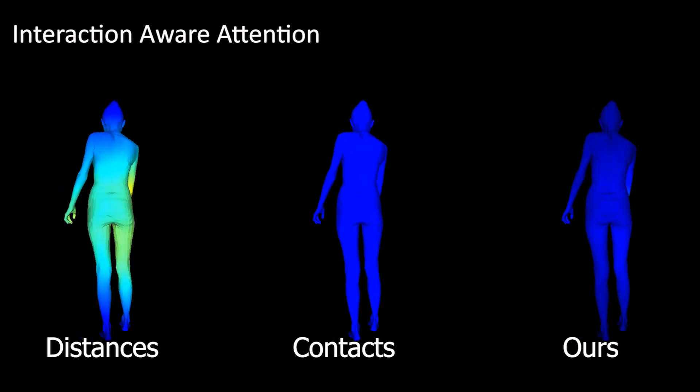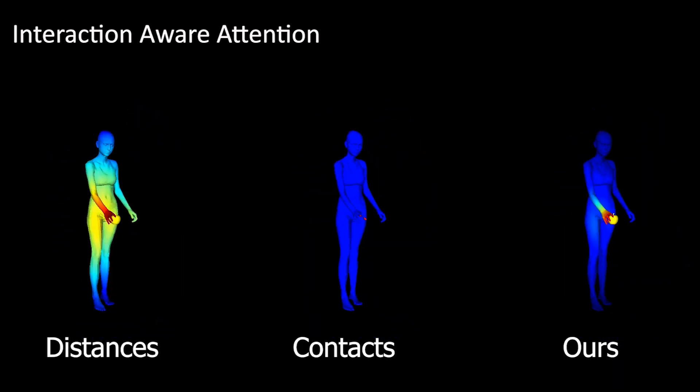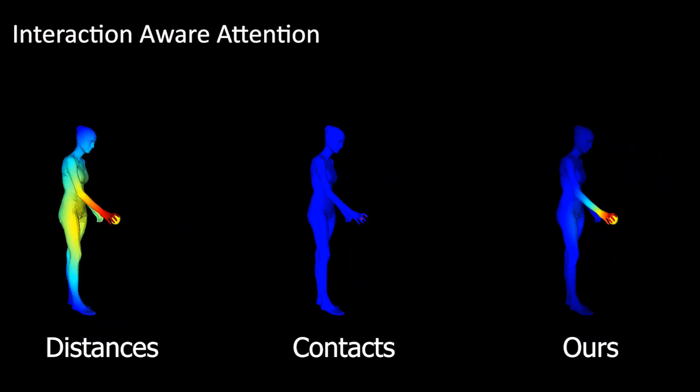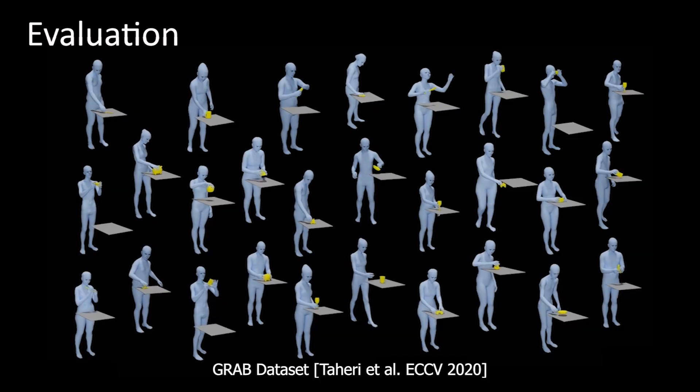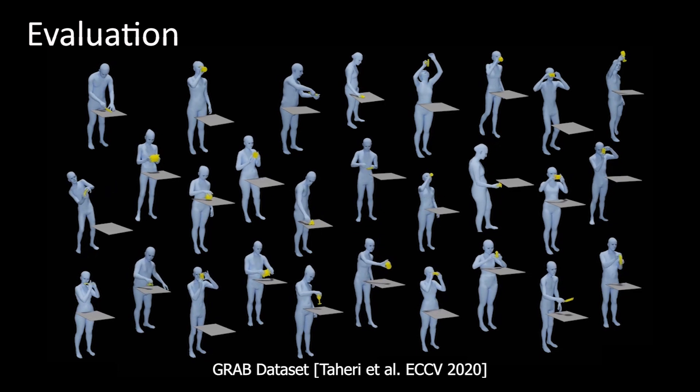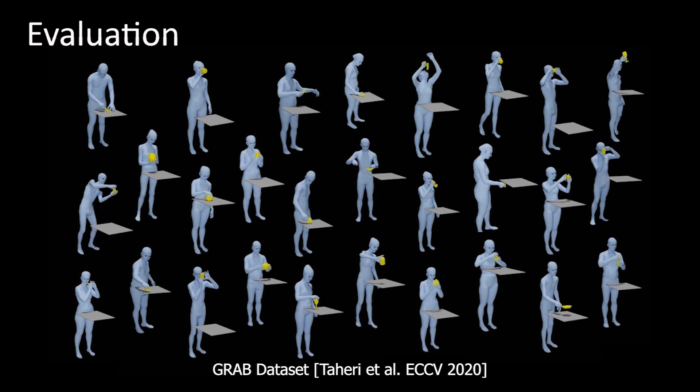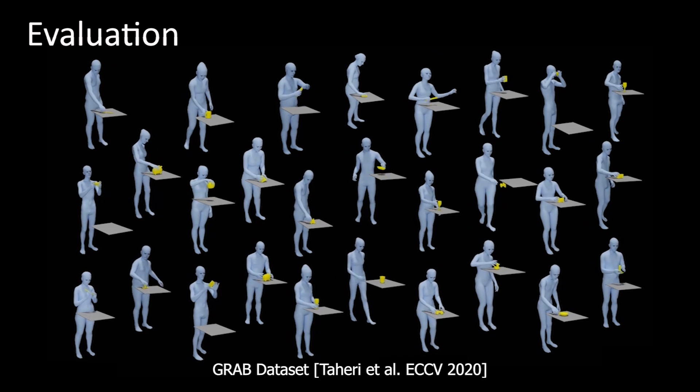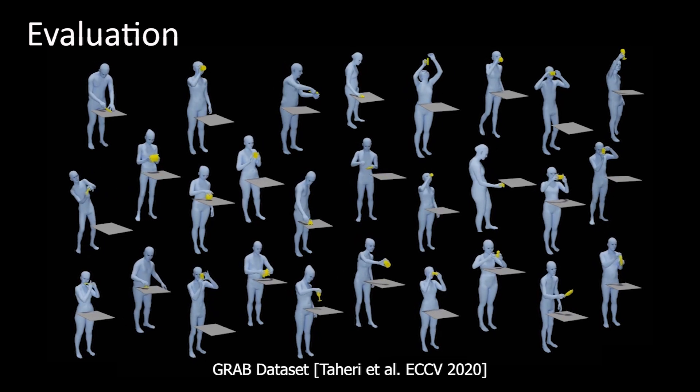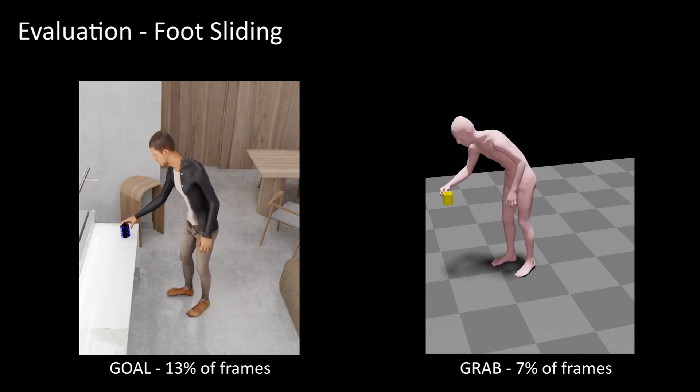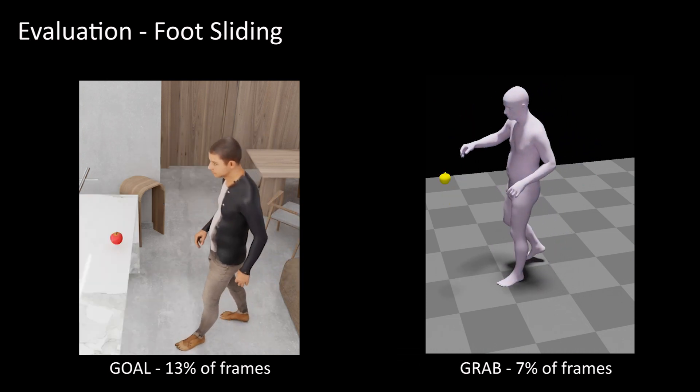This goes beyond the two main representations in the literature: distances and binary contact. For more details, please see our paper. We train GOAL on the GRAB dataset and hold out motions for five objects. Then, we use the ground truth held out motions to compute GOAL's accuracy. We find that GOAL has foot sliding for only 13% of its generated motion frames, while the ground truth has sliding for 7% of the captured motion frames.